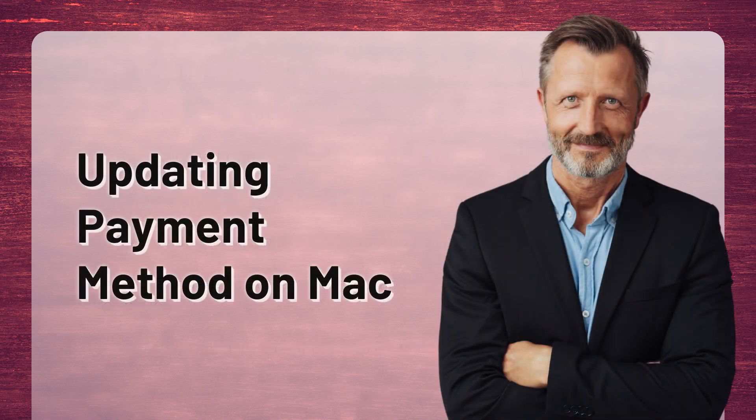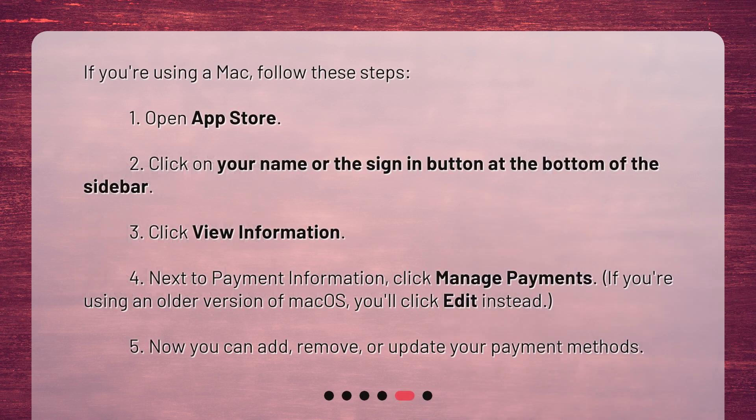Updating Payment Method on Mac. If you're using a Mac, follow these steps. 1. Open App Store. 2. Click on your name or the sign in button at the bottom of the sidebar. 3. Click View Information. 4. Next to Payment Information, click Manage Payments. If you're using an older version of macOS, you'll click Edit instead. 5. Now you can add, remove, or update your payment methods.